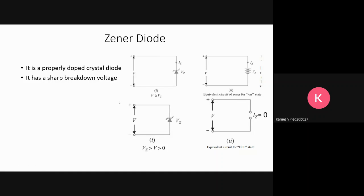A Zener diode is a properly doped crystal diode with a sharp breakdown voltage. When current passes through the Zener diode and the external voltage is greater than Vz, the Zener diode acts as a cell. When the external voltage is less than the Zener voltage, it behaves differently.